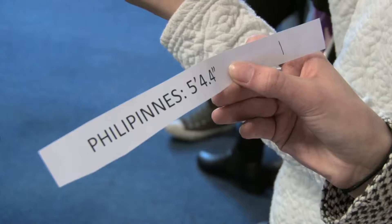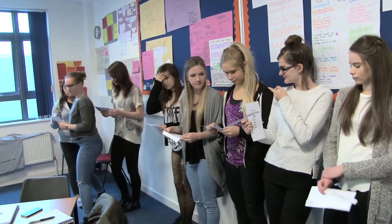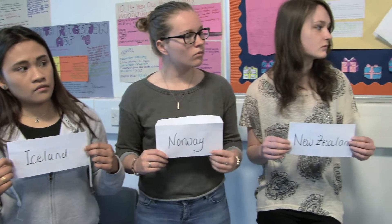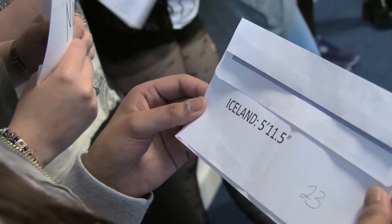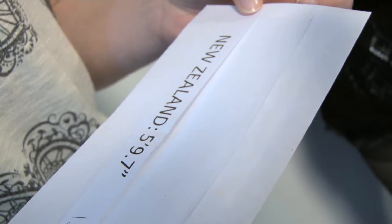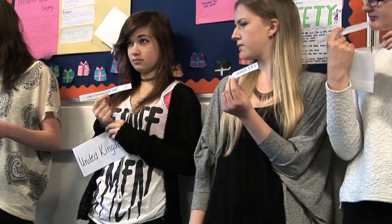The learners now open the envelopes to see what the average height in each country is and reorder themselves accordingly. Because the average heights have been taken from an international source and are presented in a way that may be unfamiliar to the learners, it is an opportunity to discuss imperial and metric units and consider the best way to manage the international data. It was decided to round each height to the nearest inch.